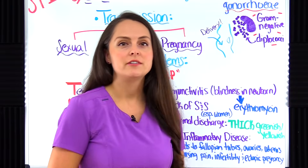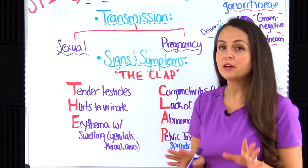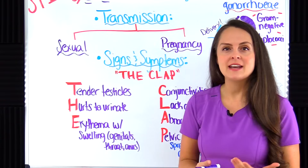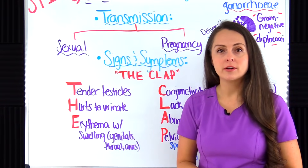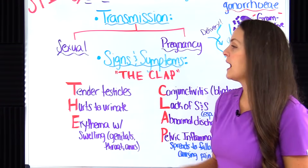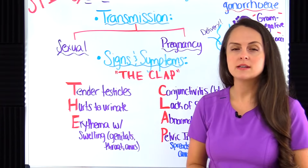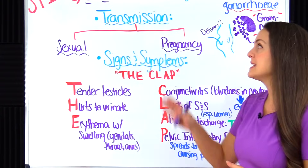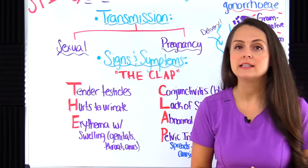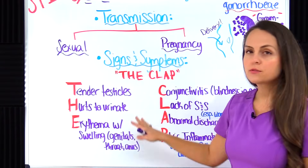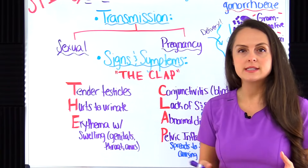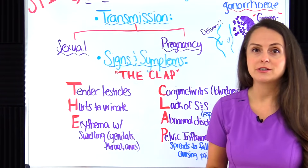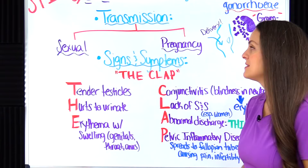What are the signs and symptoms of gonorrhea? To remember them, use the mnemonic CLAP — another nickname for gonorrhea. T stands for tender testicles: in males the testicles can become extremely swollen and painful, and if untreated this can lead to infertility. H stands for hurts to urinate — a really big one. There's a burning sensation when people try to urinate, and they may mistake it for a urinary tract infection.